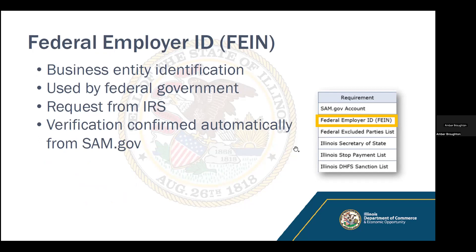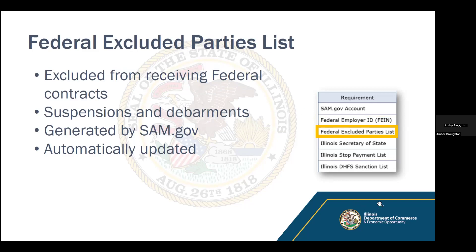The Federal Employer ID Number, or FEIN, is a business entity identification number you can receive free of charge from the IRS. Once you sync your SAM.gov registration with the GATA grantee portal and input that FEIN number, nothing additional is needed — any issues will pop up automatically. Your entity also cannot be on the federal excluded parties list. If you are on this list, it will automatically update and let us know. Depending on the severity, there may be a non-compliance issue that could be remediated, but being on this list means you are not pre-qualified and not in good standing with the state of Illinois.